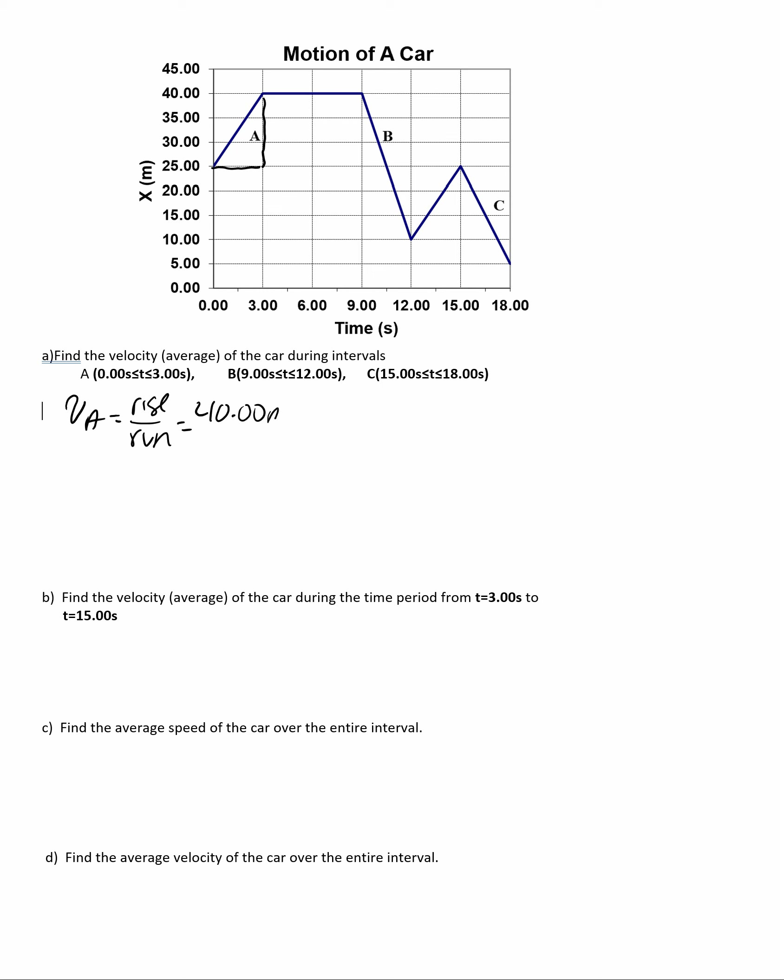40 meters minus 25 meters over 3 seconds minus 0 seconds. That is 15 meters over 3 seconds, which gives us 5.00 meters per second.